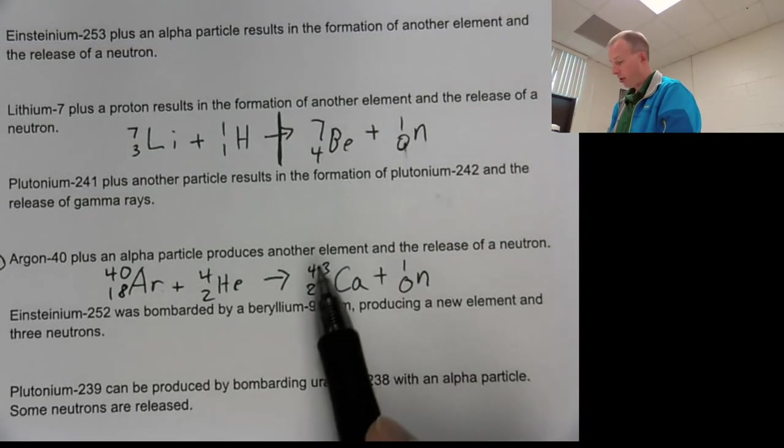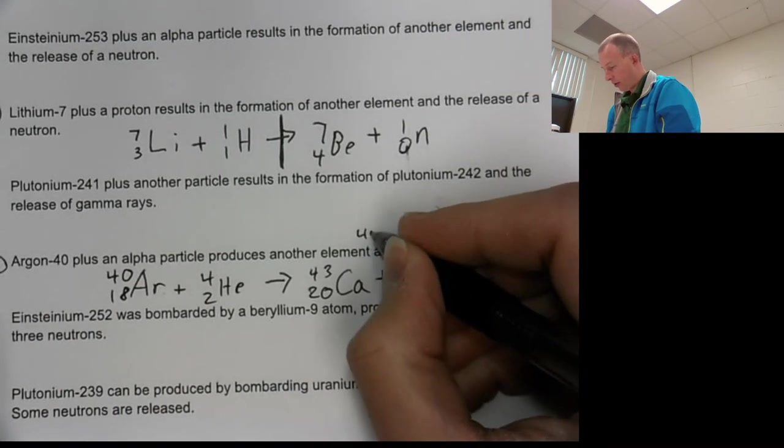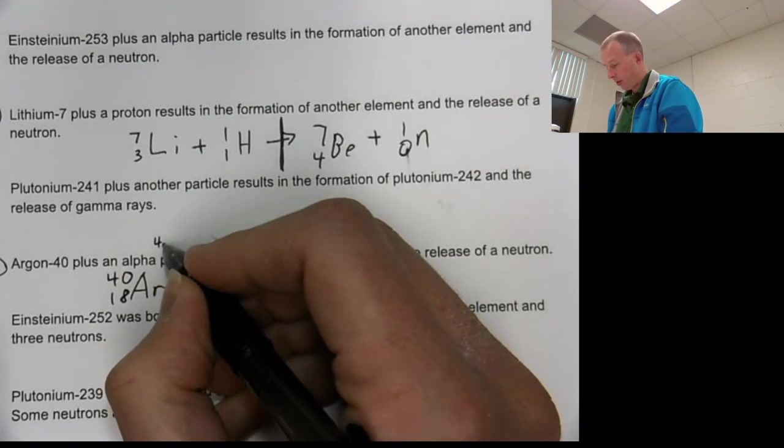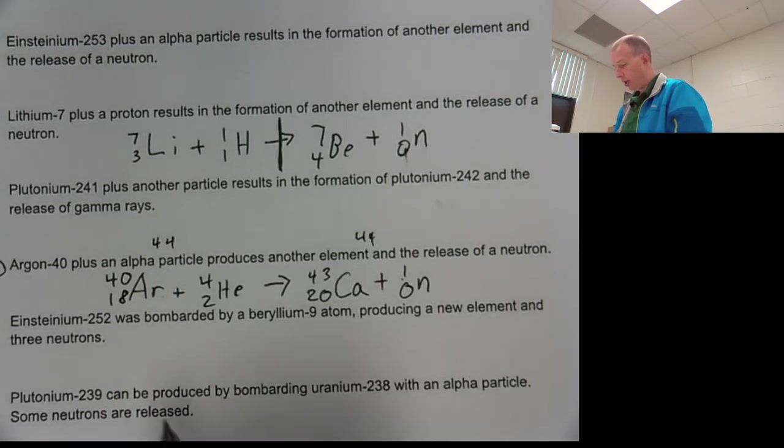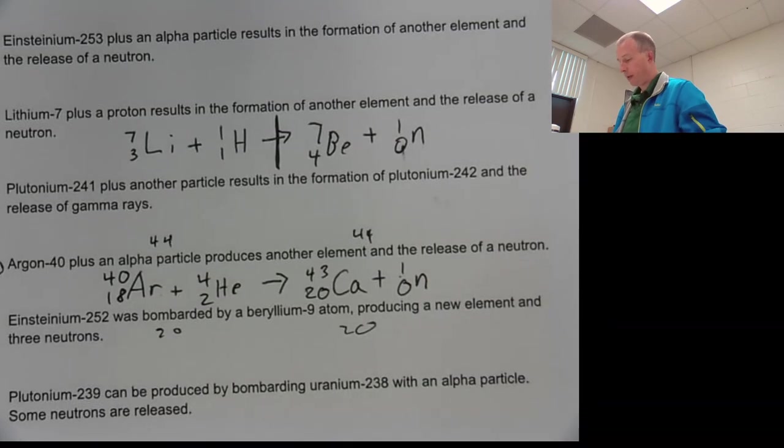And to check, you add them up and you're like, 43 plus one. So that's 44. Over here, 40 plus four, 44. You're good. 18 plus two, 20. 20 plus zero, 20. So there you go. That's how you do nuclear bombardment reactions. That's the basic idea.